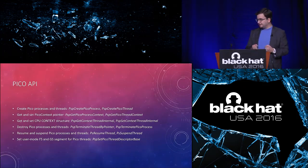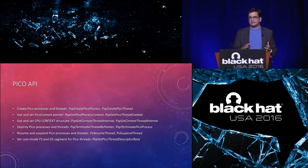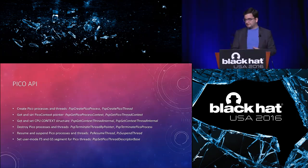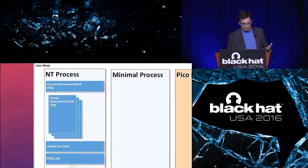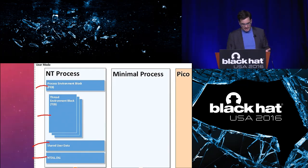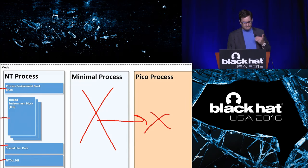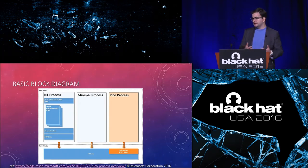Once you're a Pico provider you get access to the API — you can create Pico processes and threads, get and associate Pico context, define the starting CPU context, suspend and resume them, kill them, and configure their FS and GS segments. Microsoft published a nice diagram on their blog: an NT process has all the normal Windows things; a minimal process has none of that; and a Pico process is a minimal process with nothing inside it, but with a Pico provider taking care of all its exceptions, system calls, and everything else.